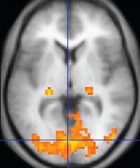Cardiac MRI is complementary to other imaging techniques, such as echocardiography, cardiac CT, and nuclear medicine. Its applications include assessment of myocardial ischemia and viability, cardiomyopathies, myocarditis, iron overload, vascular diseases, and congenital heart disease.